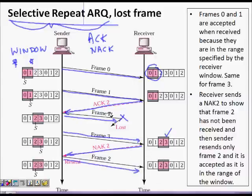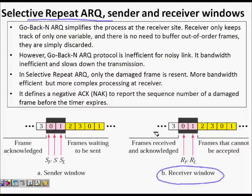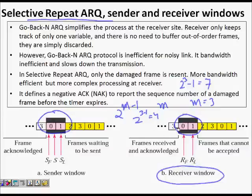In Selective Repeat, there is a sender window and a receiver window. sf is the start of the window, sl is the end, and s is the last sent frame. In Go-Back-N the receiver window was size 1, but here both the sender window and receiver window have size 2^(m-1), where m is the number of bits used to represent sequence numbers. So if m=3, the window size is 2^(3-1) = 4, which is only half the total sequence numbers.